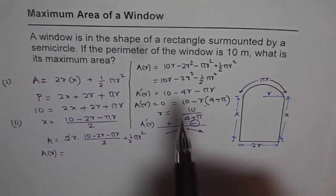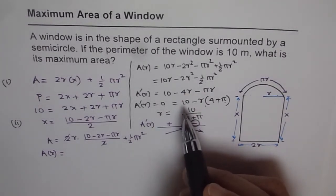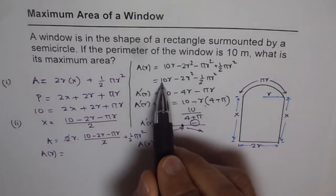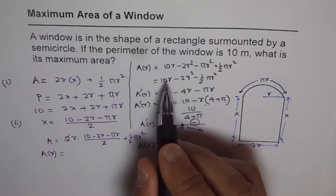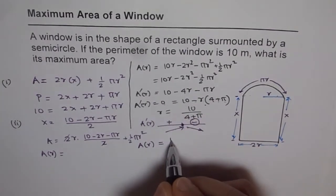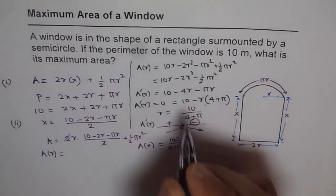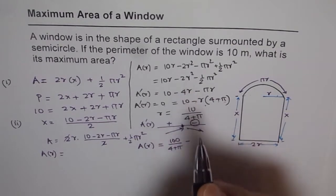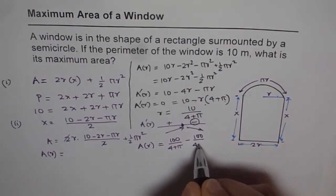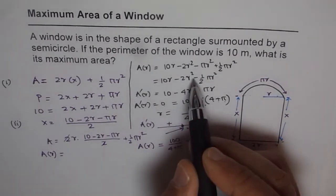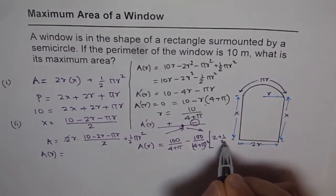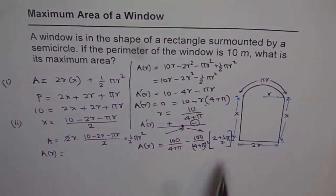To find the maximum area, we plug r = 10/(4 + π) into A(r). We get: A = 10 × [10/(4+π)] − r²(2 + π/2), where r² = 100/(4+π)². So A = 100/(4+π) − [100/(4+π)²](2 + π/2). You can simplify and write this in a proper final form.